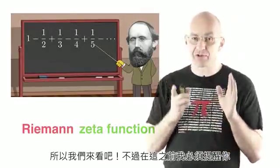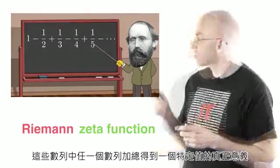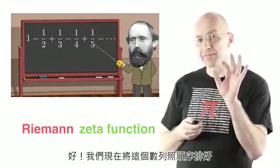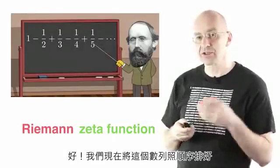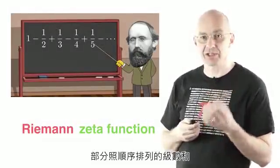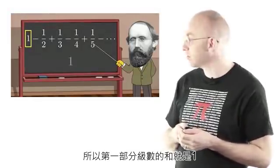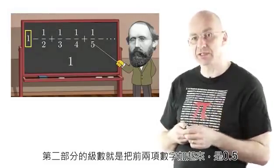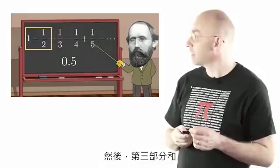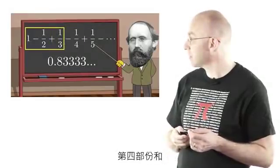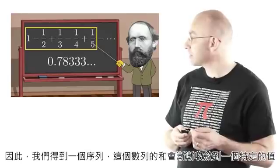But before we do it, I really have to remind you of what it actually means for one of those series to add up to a certain number. So what we do is we translate this series into a sequence of numbers, the partial sums, the sequence of partial sums. So the first partial sum is just the first term, which is 1. The second partial sum is just those two guys added up, that's 0.5 in this case. Then third partial sum, fourth partial sum, and so you get the sequence of numbers here.